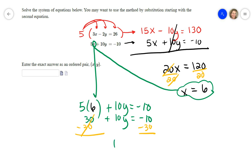So 10y equals negative 40. Then I'm going to divide by 10, which means take negative 40 and divide it by 10. That cancels, and y is negative 4. So my ordered pair is x equals 6 and y equals negative 4.